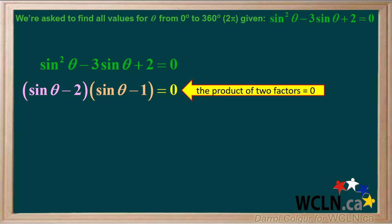We now have the product of two factors equals 0. So we can solve this equation by equating each factor to 0.